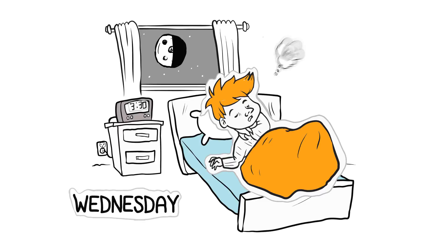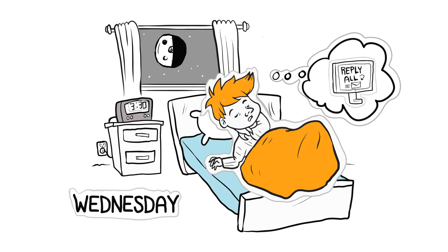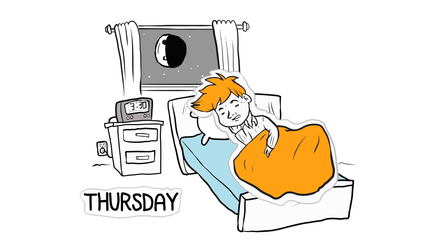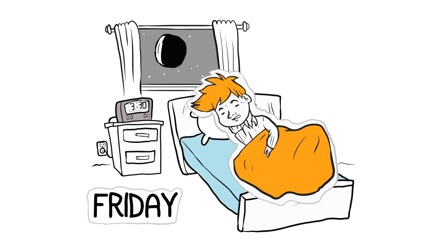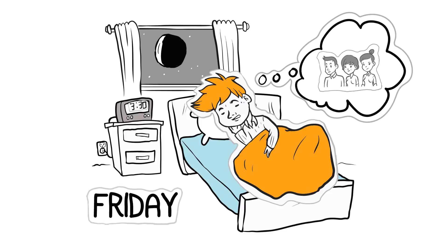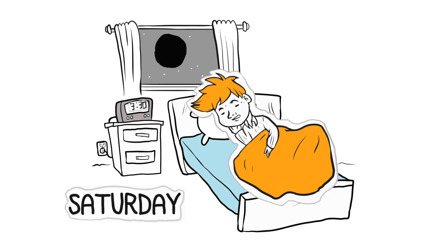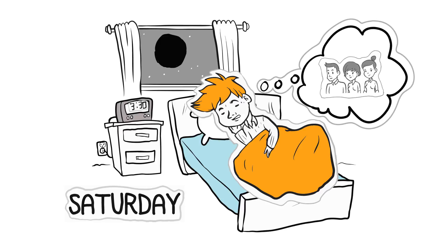Wednesday, he realizes that he accidentally hit reply all and sent critical information to the wrong people. On Thursday, someone sends confidential information outside the domain and he can't find out who it is. Friday brings bad news about all the banned addresses the company users are still keeping as contacts. And Saturday, he realizes that all the ex-employees reappear as suggested recipients on emails forever.